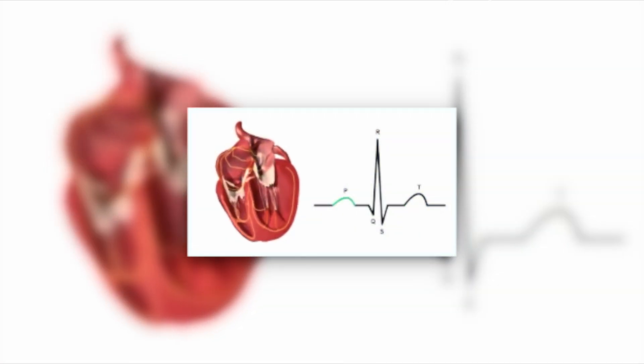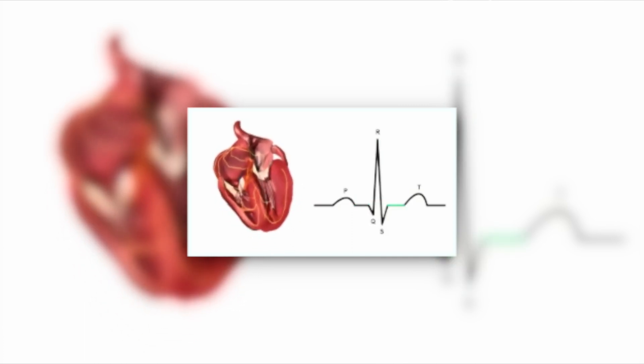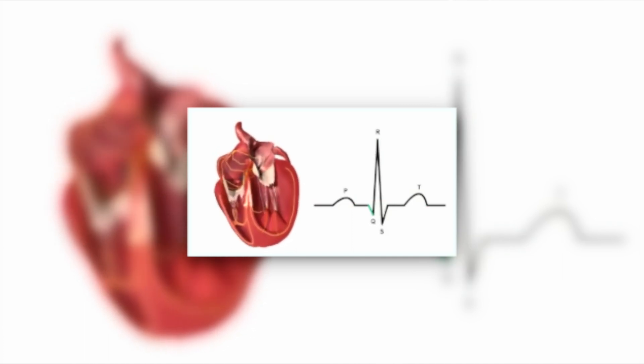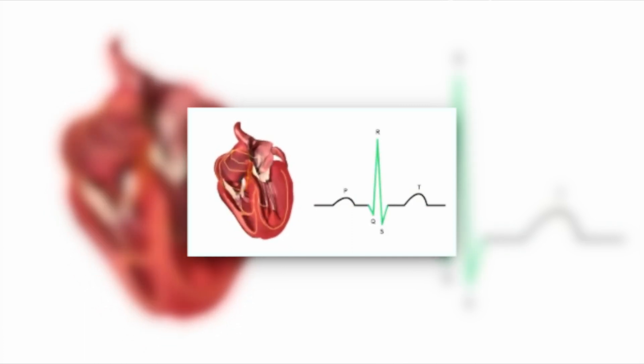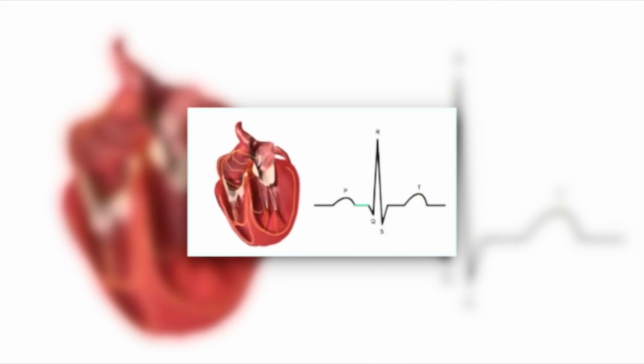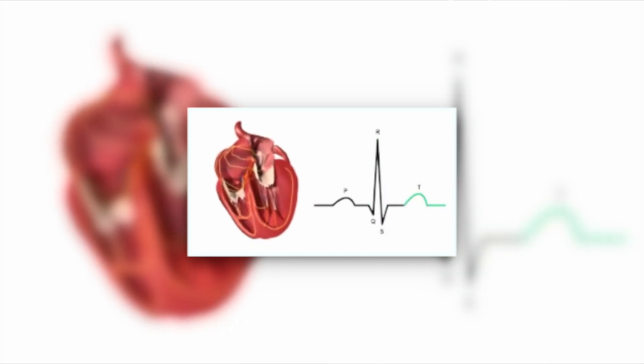The P wave represents the electrical activity that occurs when the atria contract. The QRS complex represents the electrical activity that occurs when the ventricles contract, and the T wave represents the repolarization of the ventricles.